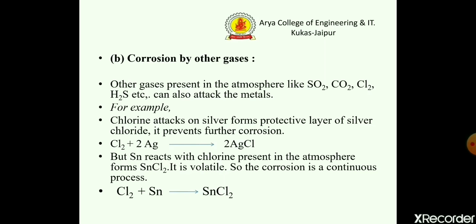For example, if chlorine attacks silver, it forms a protective layer of silver chloride and prevents further corrosion — meaning on the surface of silver, further corrosion will not be possible. The reaction is: Cl2 + Ag → AgCl. The second example is tin reacting with chlorine present in the atmosphere to form SnCl2, which is volatile in nature. If a volatile layer forms, corrosion will be a continuous process. The reaction is: Cl2 + Sn → SnCl2.